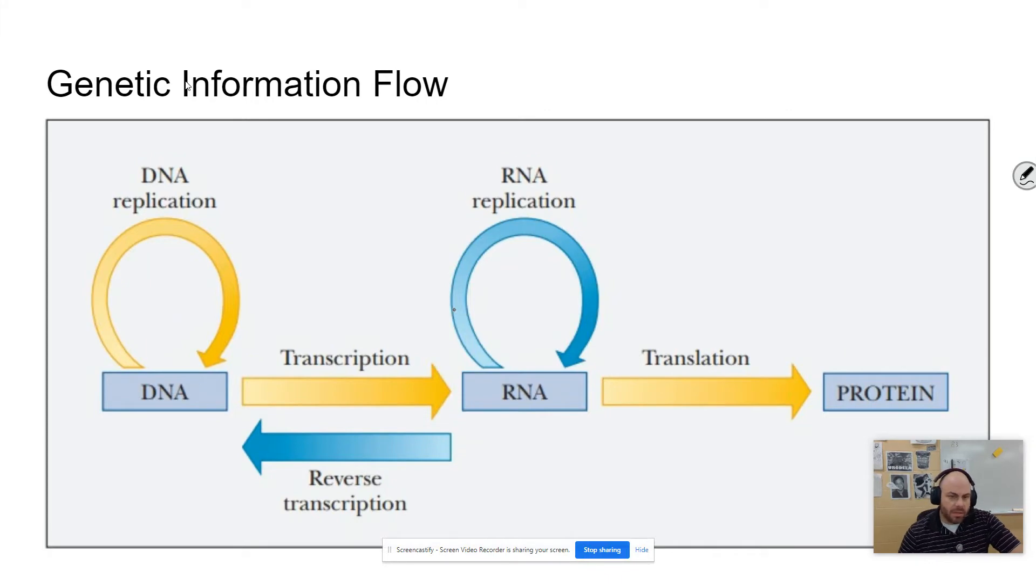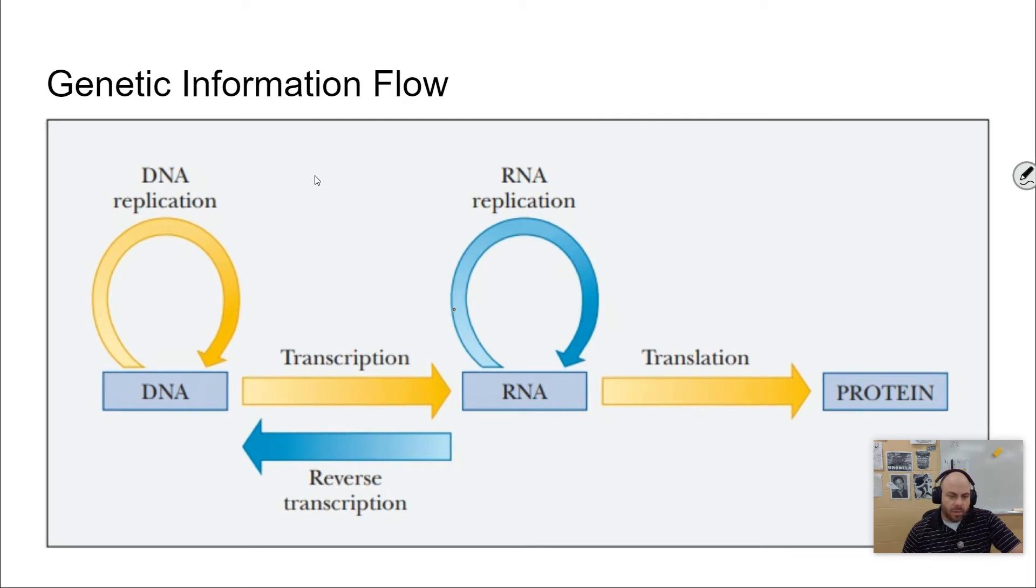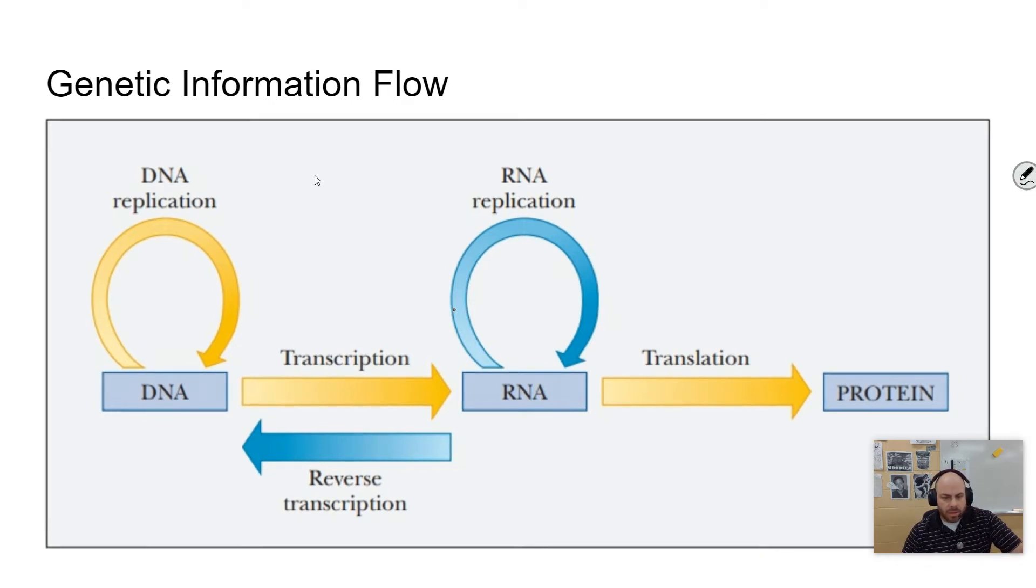And so in order to begin talking about that, we have to talk about general flow of information in cells. And the way this works, you can see this picture represents it really well. Sometimes this is called the central dogma of biology.